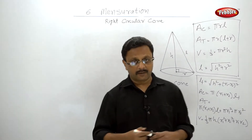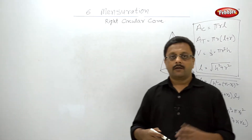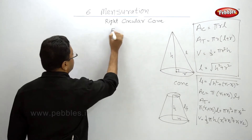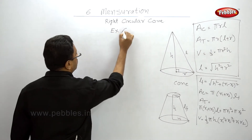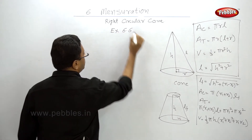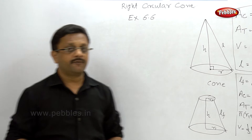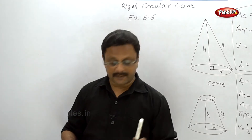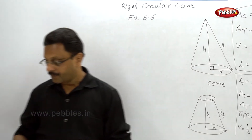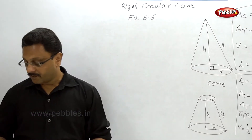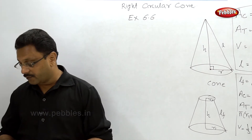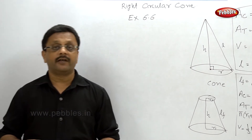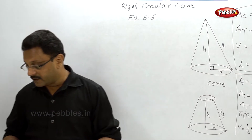Hello friends, welcome back. We are going to discuss exercise 6.6. The curved surface area of a cone is 4070 cm² and its diameter is 70 cm.